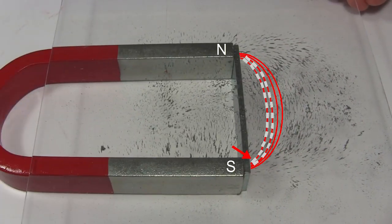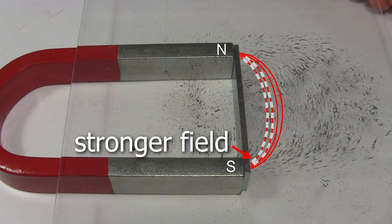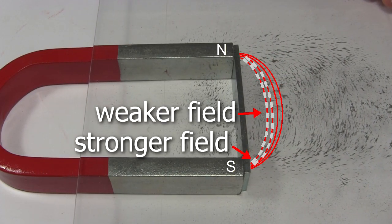Wherever they're close together, the magnetic field is stronger, like close to the end of the legs. Wherever they're farther apart, the magnetic field is weaker.